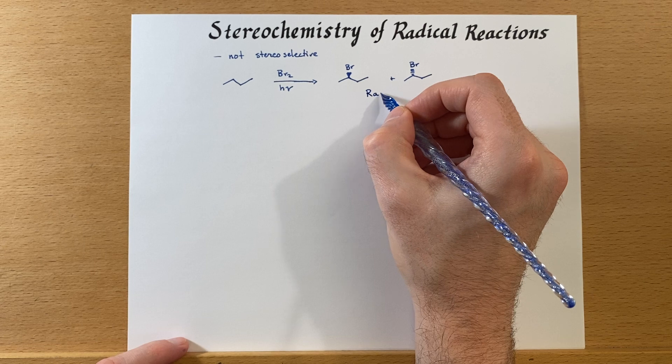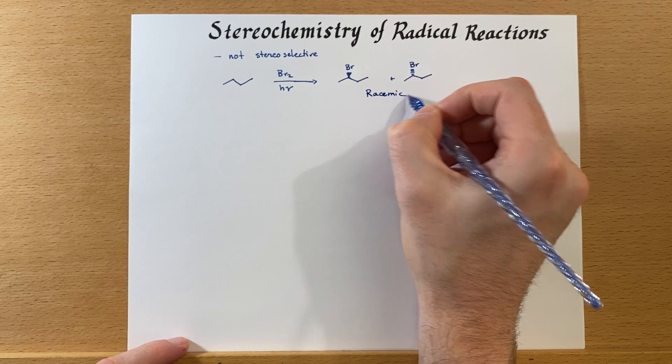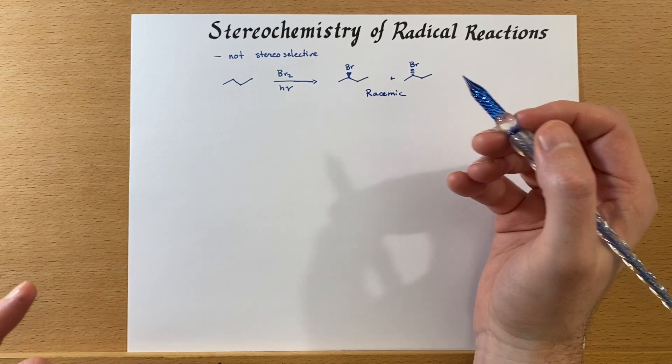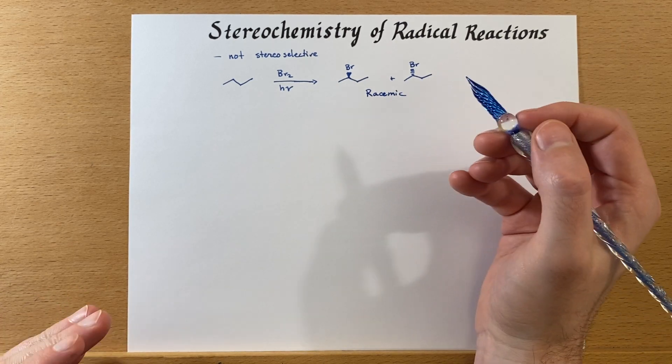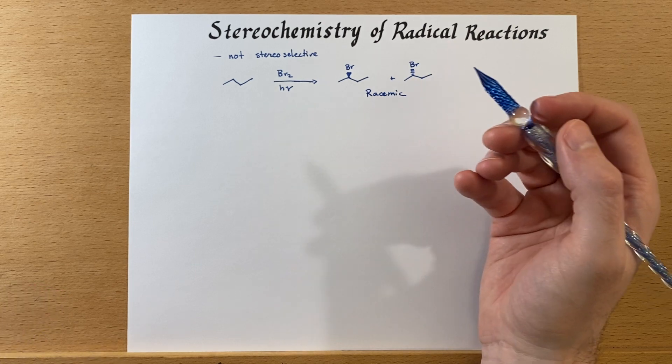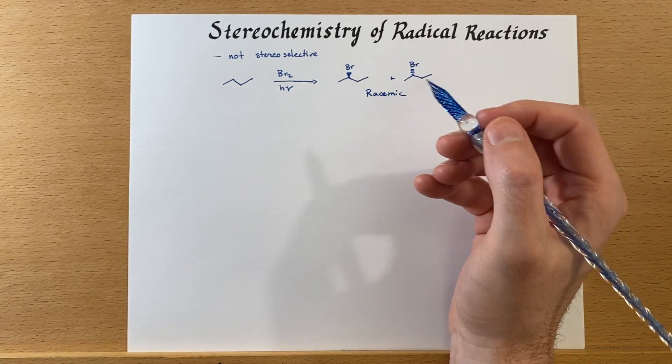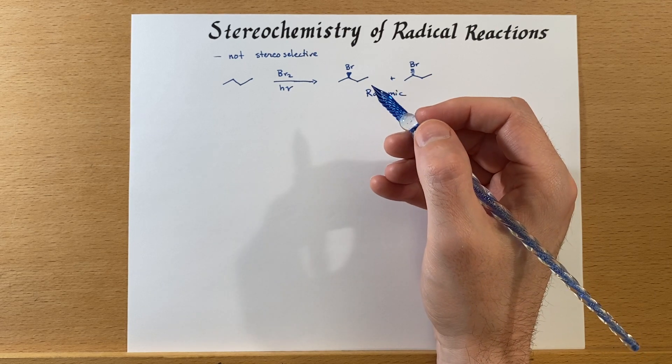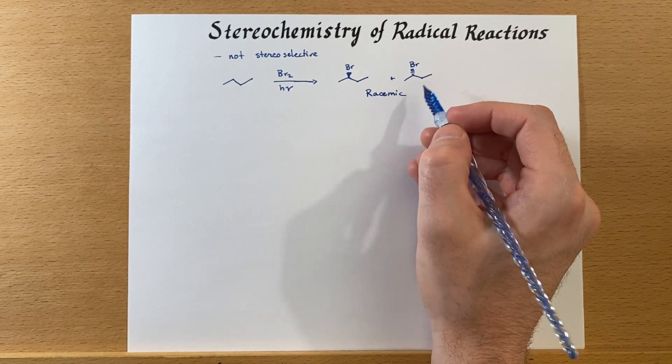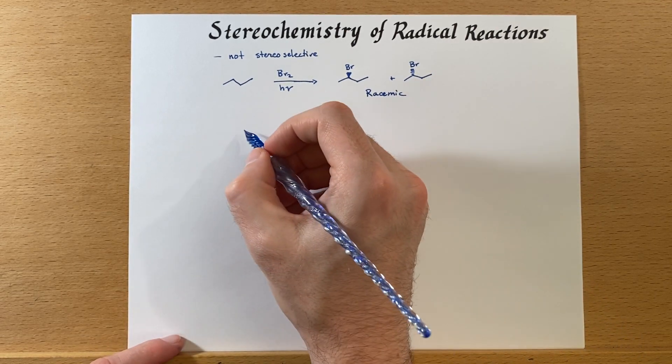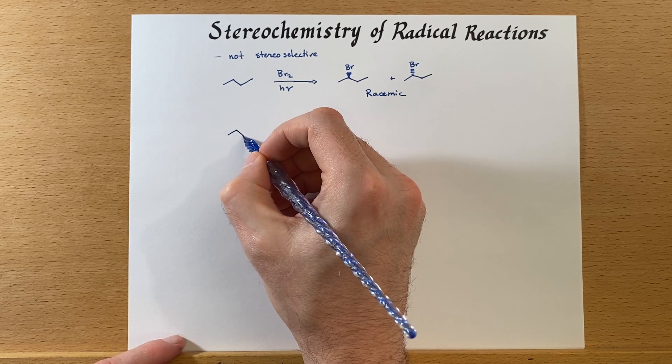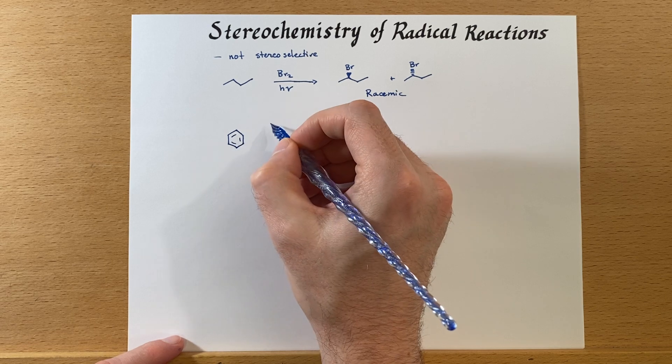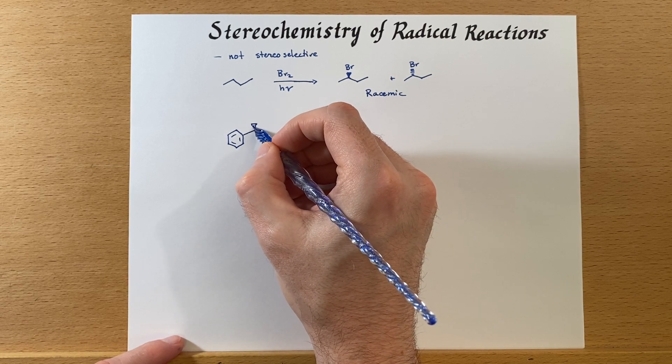Remember, radical intermediates are planar, so similar story to our carbocations. If you have the possibility of stereochemistry, you're going to end up with a mixture. Now you might ask, what happens if we start off with a chiral molecule such as this?